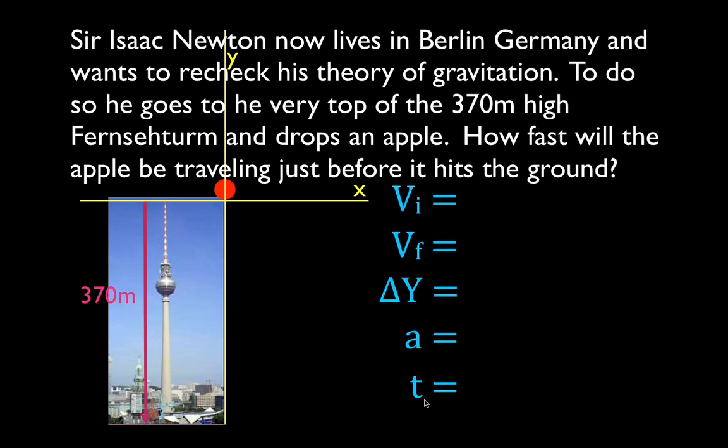I like to fill in what I know and what I don't know. The first thing I know, I'm told explicitly that the tower is 370 meters high. Well, that means the change in position of the apple is minus 370 meters, the final minus the initial that's falling down in the negative direction.